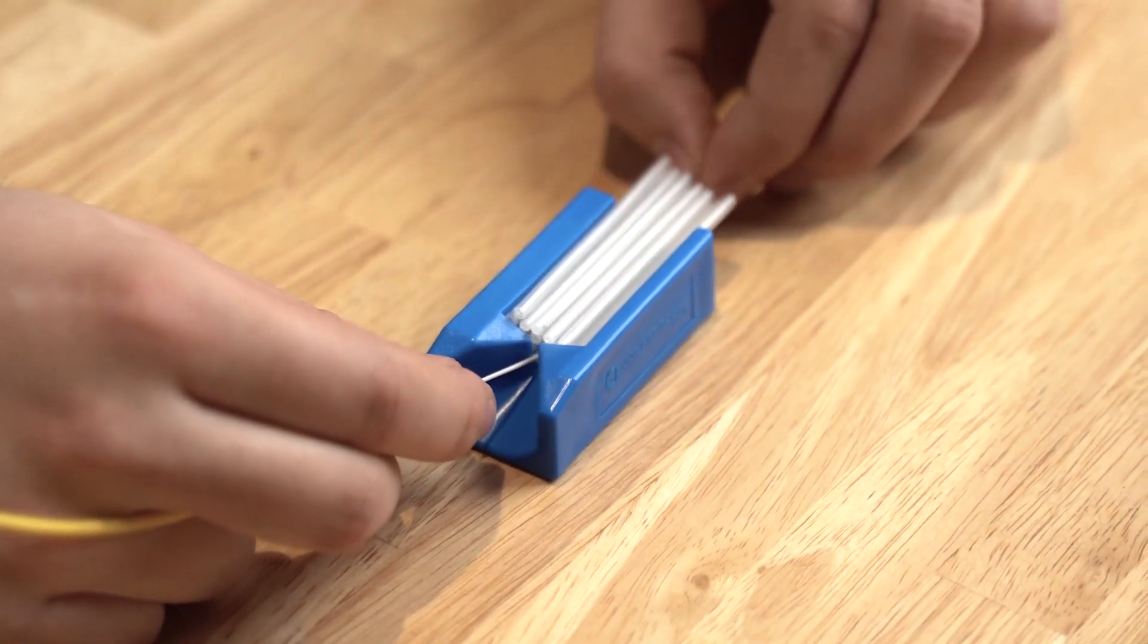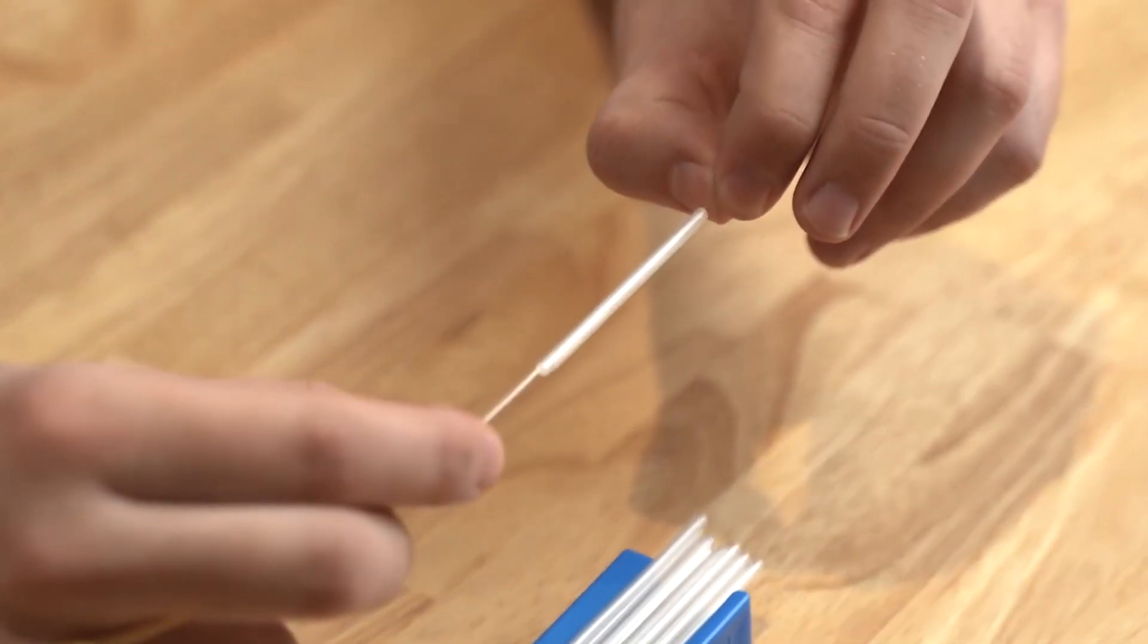When loaded, take both ends of the fiber and simply lift the protection sleeve out of the unit.